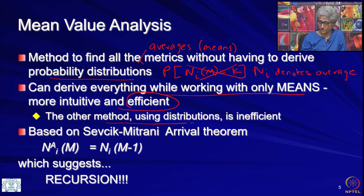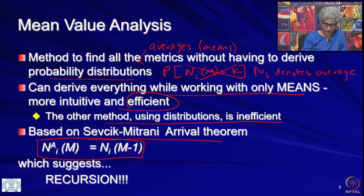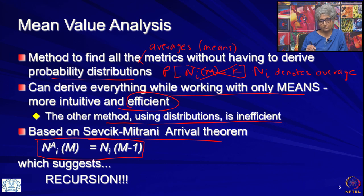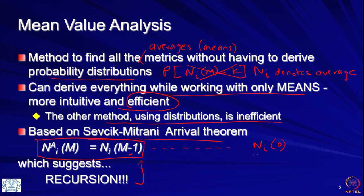This is important because there is another method which uses distributions and it is very computationally costly. The Sevchik-Mitrani theorem is extremely critical in deriving mean value analysis. The heart of the theorem is that the average number of customers at node i seen by an arrival when the load level is M is the same as the unconditional average at that node when the load level is one less, M-1. This relationship suggests a recursive method: when something at load level M can be expressed as a metric at load level M-1, we can build up step by step.